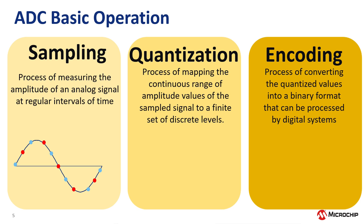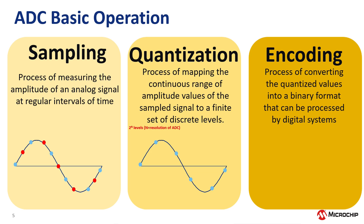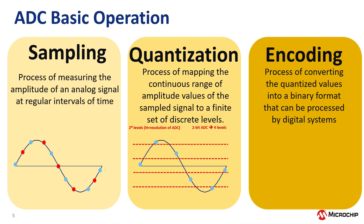Then each sample value is quantized, which means it is mapped to the nearest value within a finite set of discrete levels. The number of discrete levels is determined by the resolution of the ADC, and typically the resolution is expressed in terms of bits. The number of discrete levels is 2 to the power of that resolution. For this example, let's assume a 2-bit ADC, which means it is quantized into 2 to the power of 2, or 4 levels. For a 3-bit ADC, that would be 2 to the power of 3, or 8 quantization levels. A 12-bit ADC has 2 to the power of 12, or 4,096 different quantization levels.